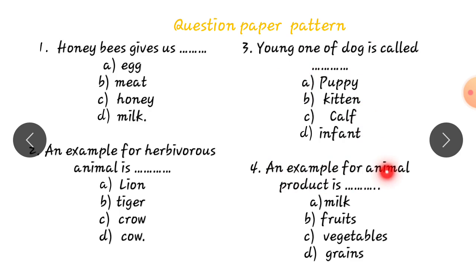An example for animal product is. Animal product is. Milk, fruits, vegetables, grains. Correct answer is milk. So, select the option A.